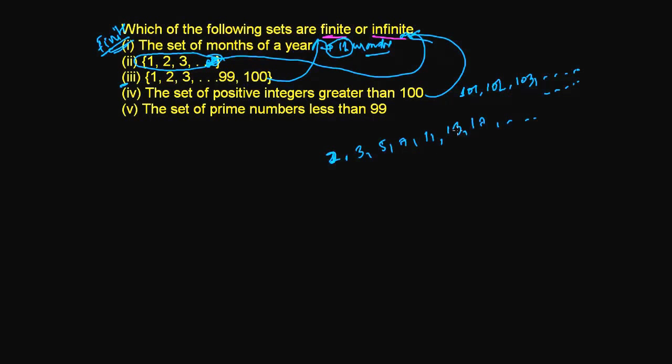You can write all the prime numbers till 99, below 99. 99 is the endpoint, just below 99 you need to find them. This is again a fixed number, so it's a finite set. I hope you understand this. Let's do another exercise in the next video.